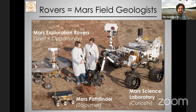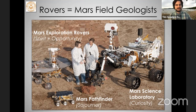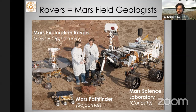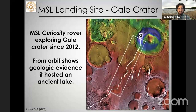It's hard to send geologists into the field on Mars, so instead we send rovers, which we can think of as the field geologists of Mars. This is a family portrait of Mars rovers, although it's soon to be out of date as the Perseverance rover is on its way. MSL, the Curiosity rover, landed in Gale Crater in 2012 — an example of a large hydrologically closed lake that from orbit shows evidence of hosting an ancient lake.